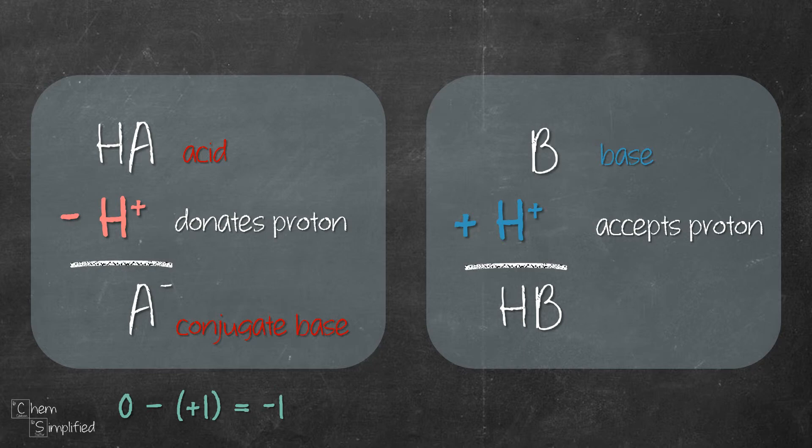Lastly, we'll deal with the charge. We have 0 charge from B plus +1 from proton and we get a +1 charge. That gives us HB+ as the conjugate acid for B.